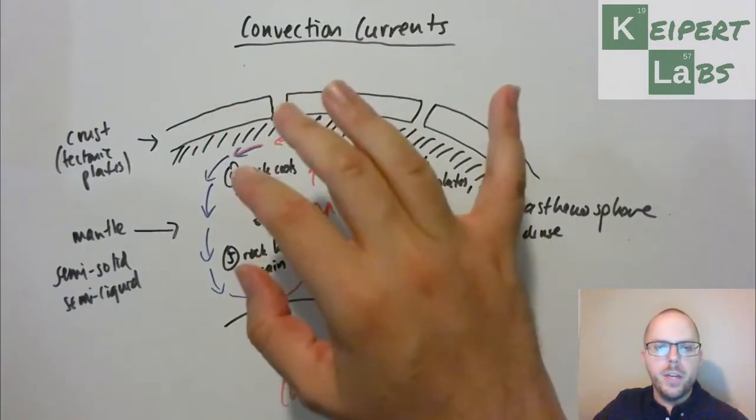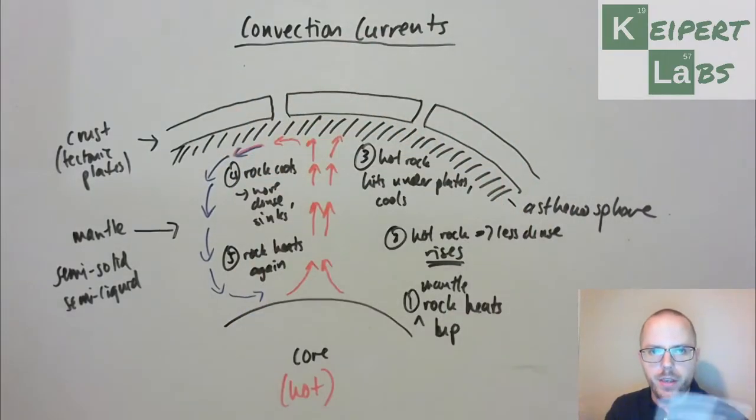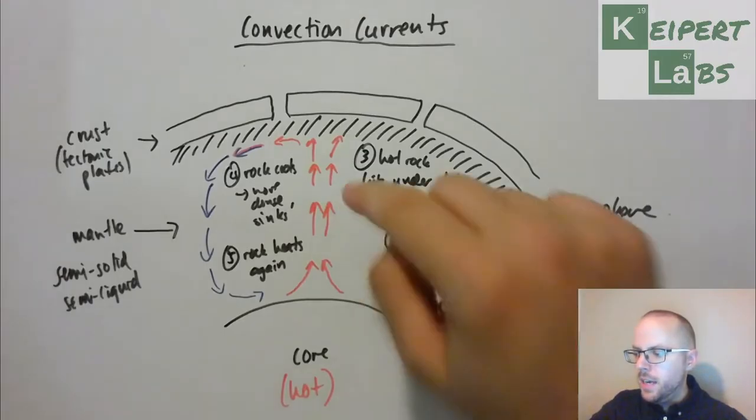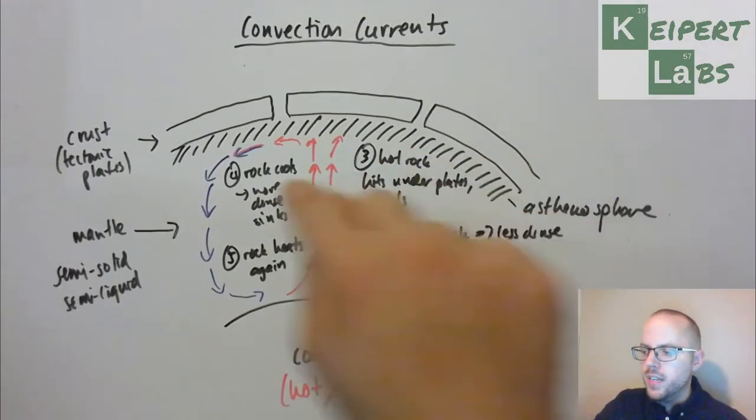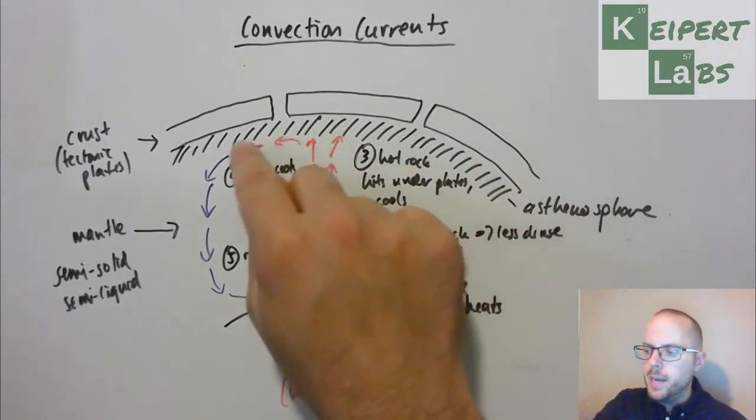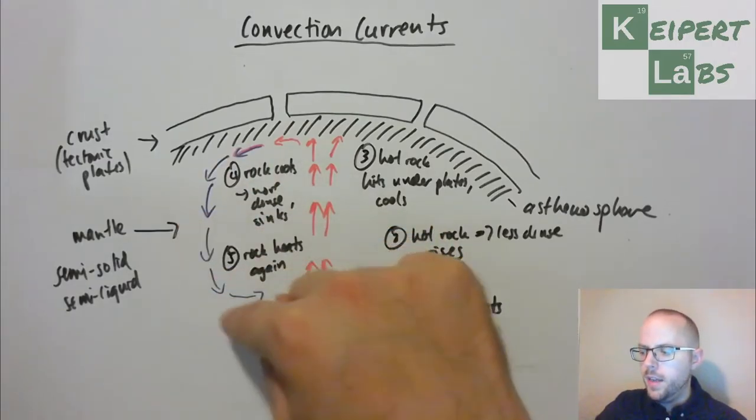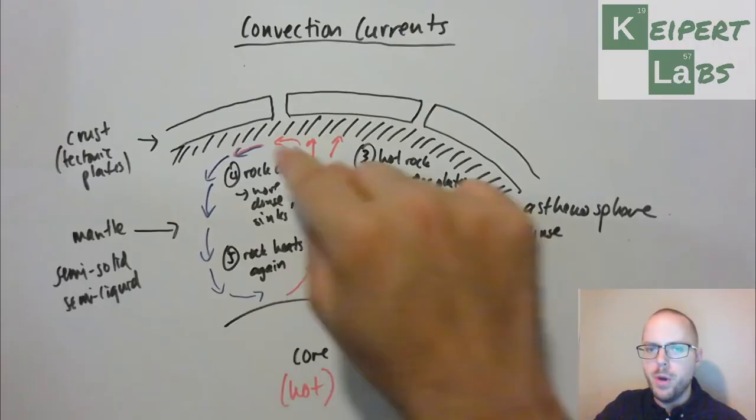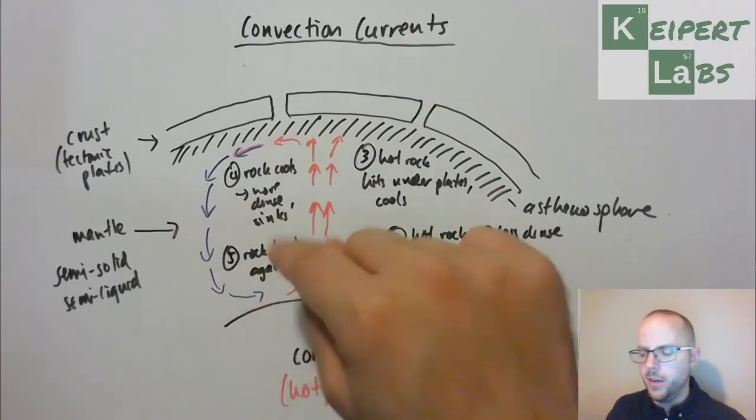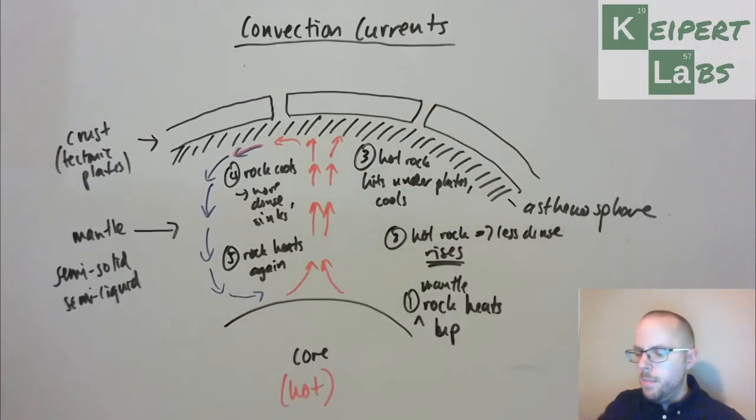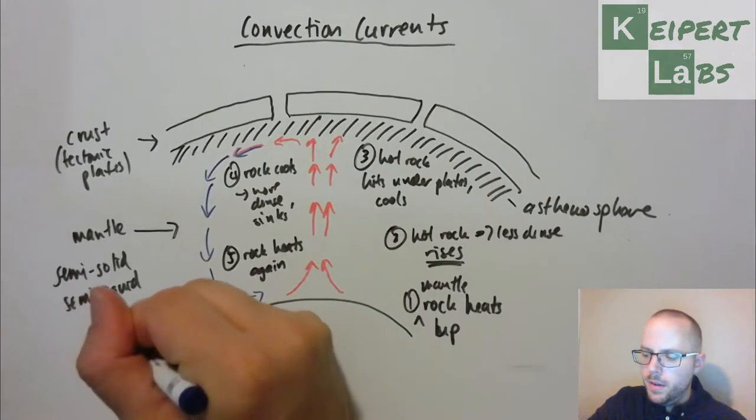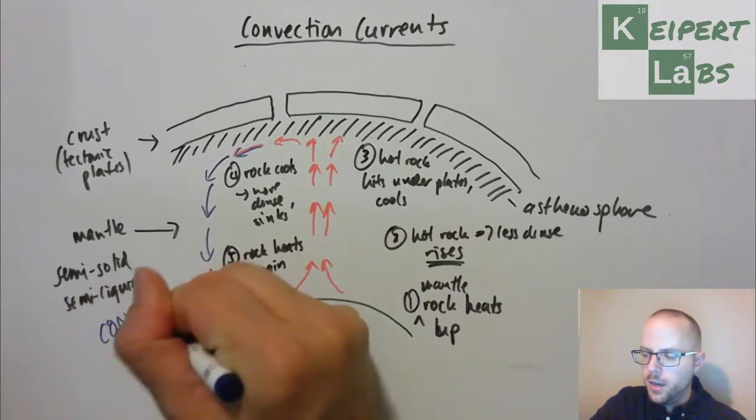But as it moves its way up, eventually it reaches the limit. It can't extend any further because we have these tectonic plates that seal the outside, even though they're separate. It's not like popping a champagne cork. But it hits underneath the plates and it cools, starts to cool down. As it cools, it becomes more dense, and then it starts to sink back down.